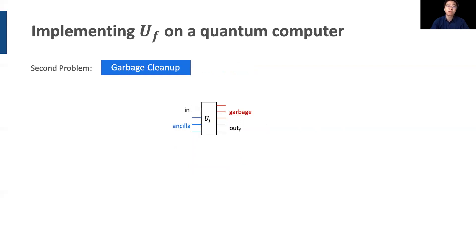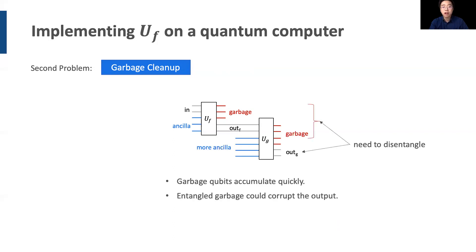Now the second problem is to clean up garbage qubits. Shown here, U sub F produces 3 garbage qubits and 2 output qubits. Suppose the output qubits are the input to another function, U sub G. If we were careless when putting the computations together, garbage qubits could accumulate quickly. Worse yet, the garbage qubits may be entangled with the output qubits, which means that if an error occurred to the garbage, the output will be corrupted as well.